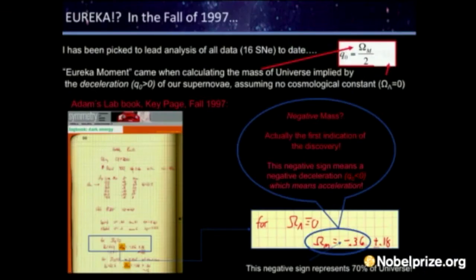So I wrote a simple computer program to tell me what the answer was, and hadn't yet noticed that something very strange was going on. This is a key page from my lab notebook. When I evaluated what the mass of the universe was, I got an unphysical, nonsensical answer — a negative value. That wasn't even one of the possibilities. It wasn't in column A or column B.